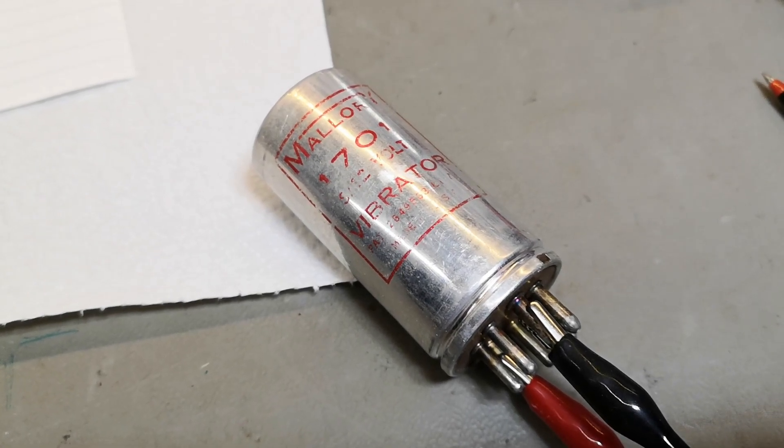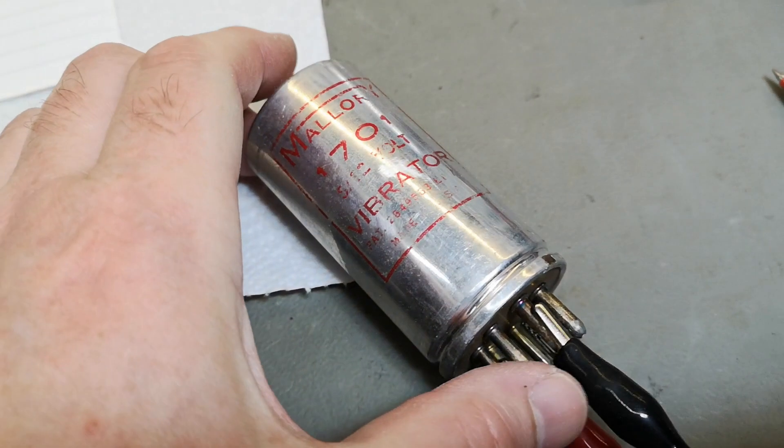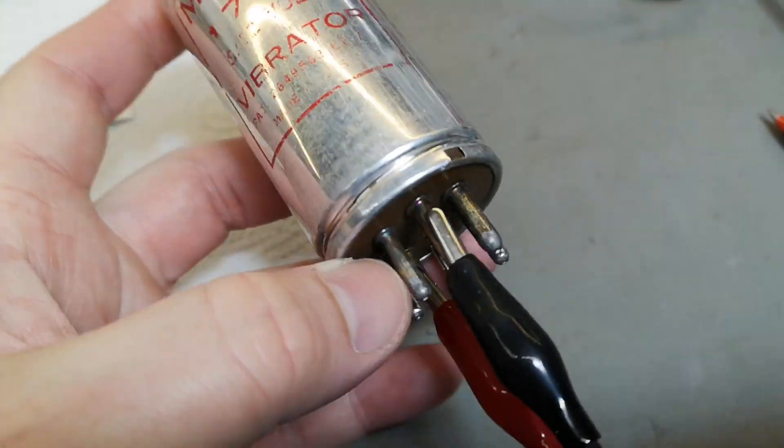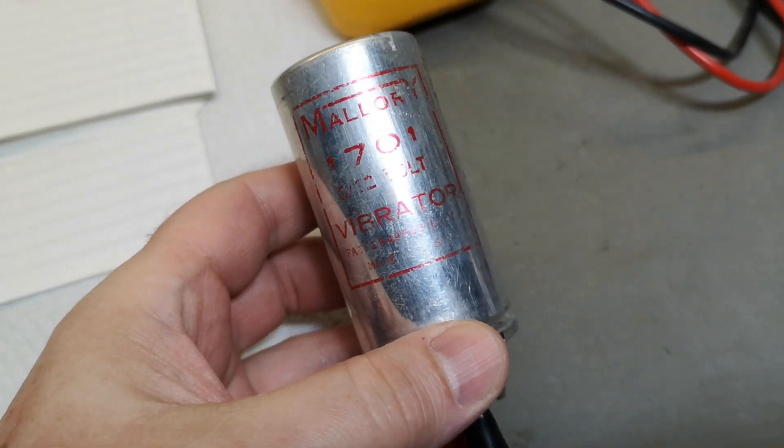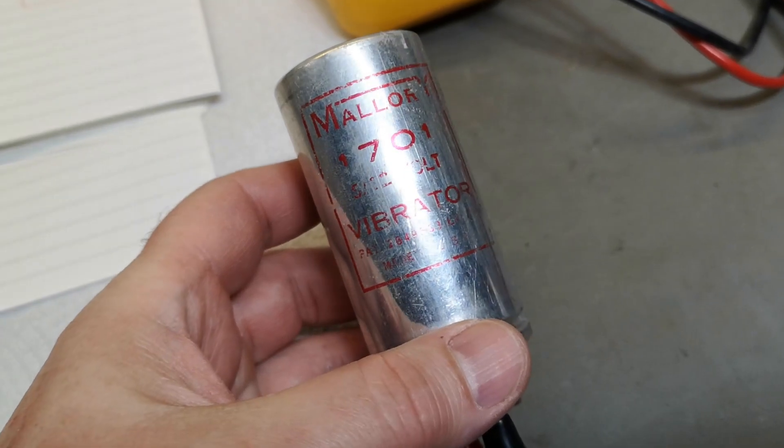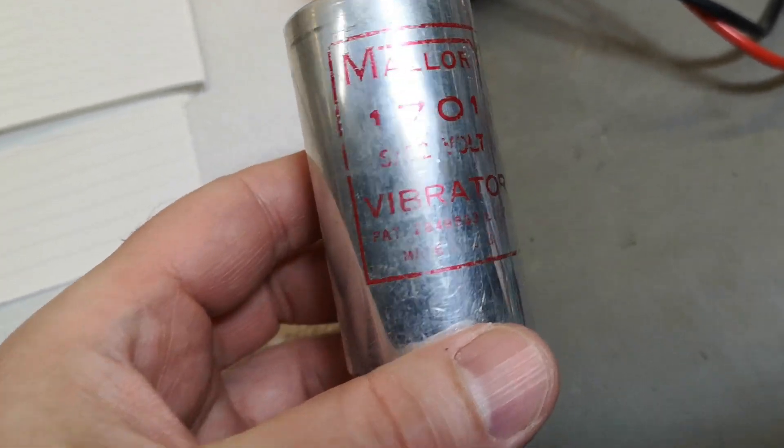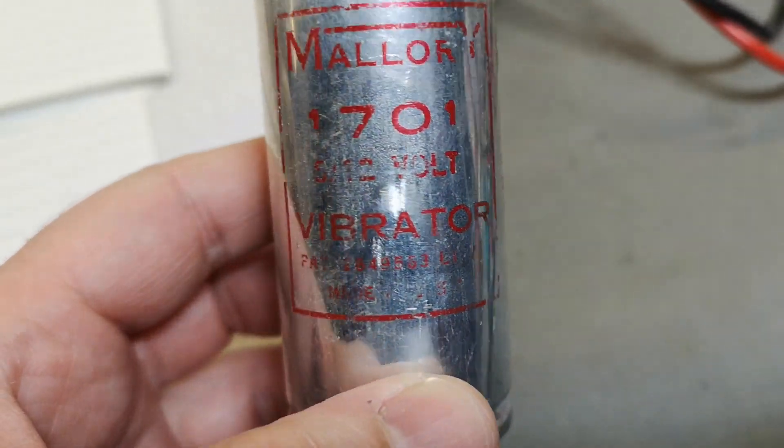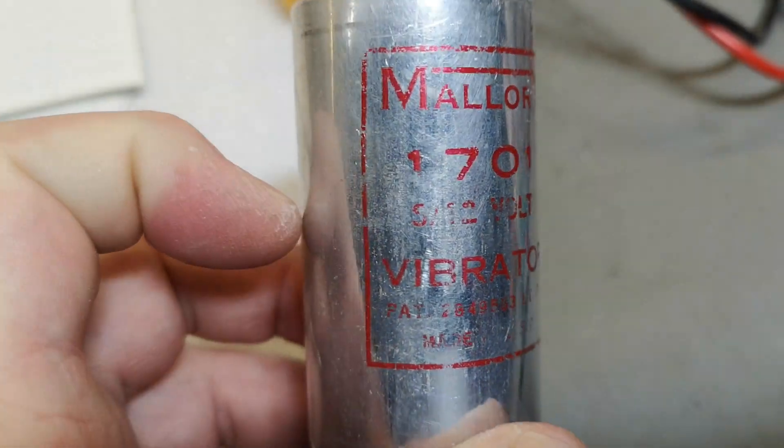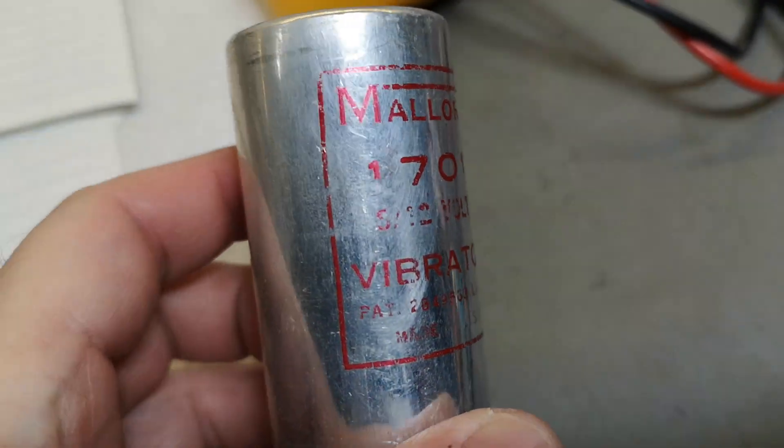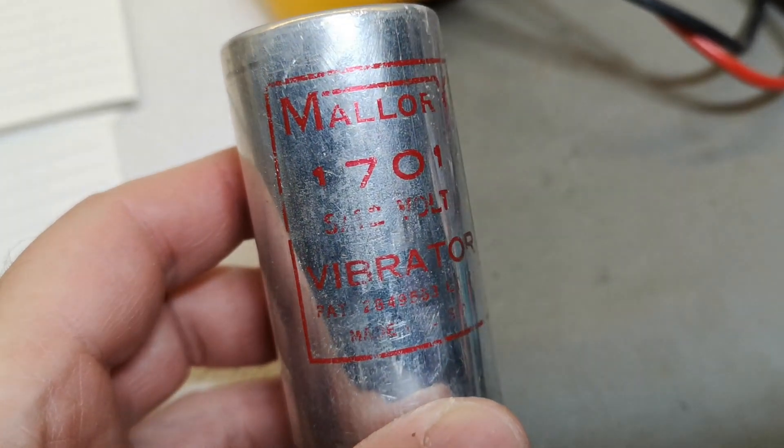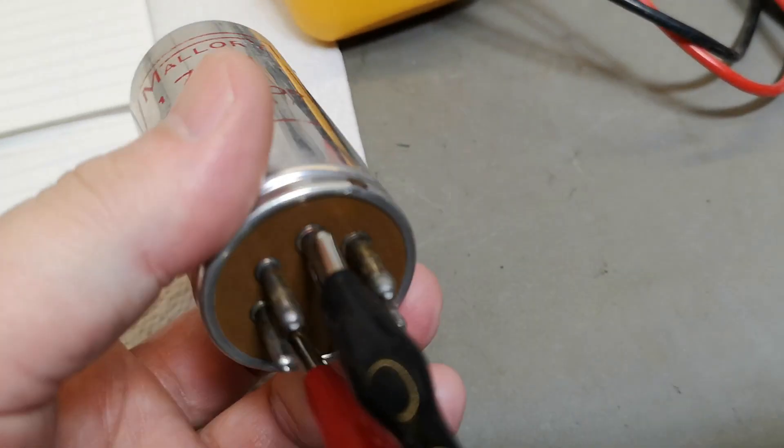Welcome to a new test and teardown video. This time we're going to talk about the Mallory 1701 vibrator. This one can run on 6 to 12 volts. It is very, very old.